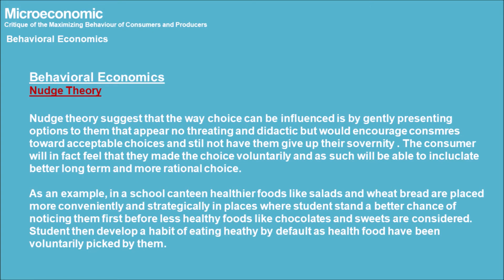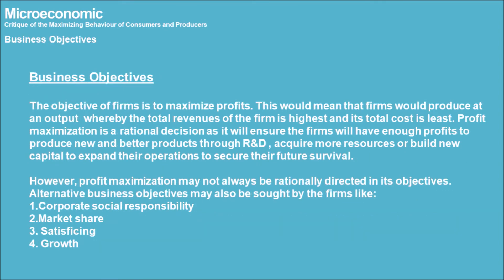Nudge Theory suggests that consumer choice can be influenced by gently presenting options that appear non-threatening and non-didactic, encouraging consumers toward acceptable choices while not having them give up their sovereignty. The consumer feels they made the choice voluntarily. For example, in a school canteen, healthier foods like salads and whole wheat bread are placed more conveniently and strategically so students notice them first before less healthy foods like chocolates and sweets. Students then develop a habit of eating healthy by default.